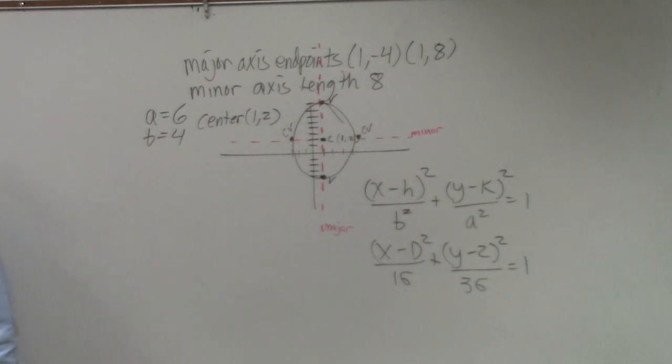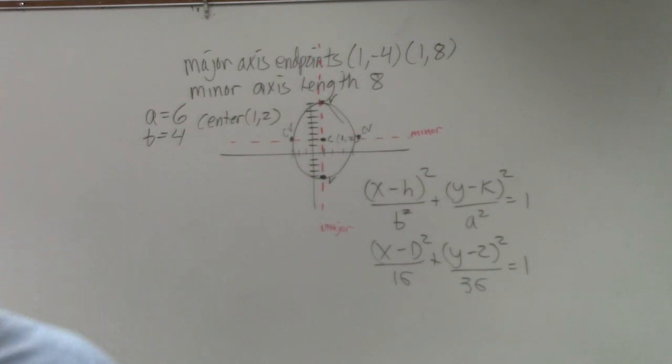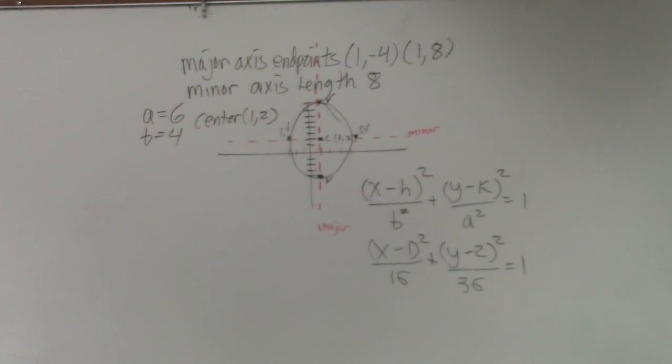A is under your x squared when the major axis is horizontal. A is under the y when the major axis is vertical. And a is always larger than b because a represents the length of your major axis.